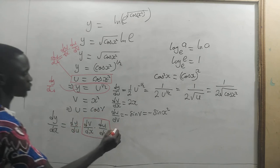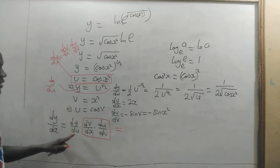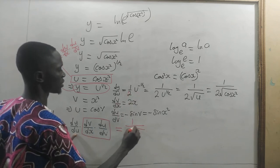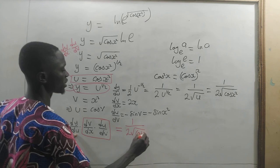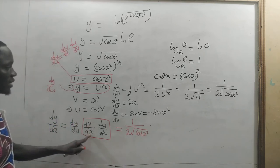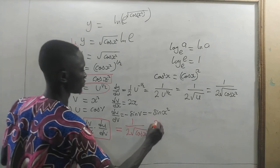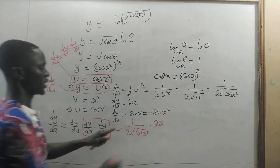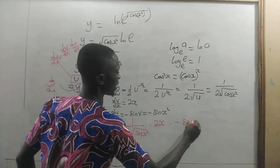So I am going to put all of them together. This will give us dy/du: 1 divided by 2 times the square root of cosine x squared, times dv/dx: 2x, times du/dv: minus sine x squared.